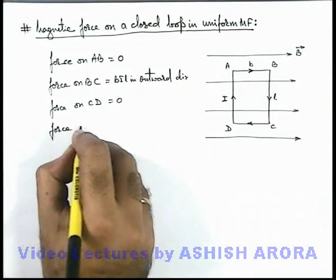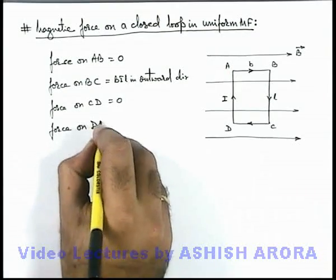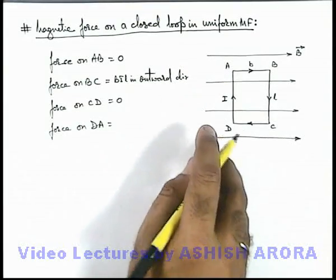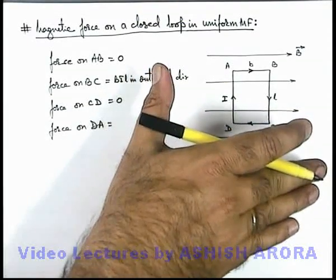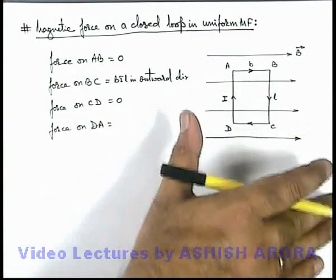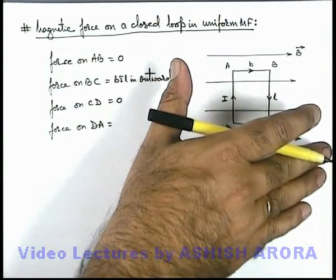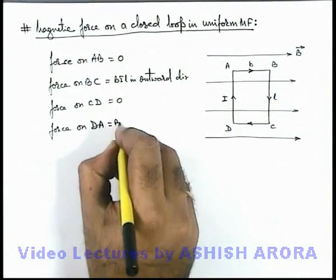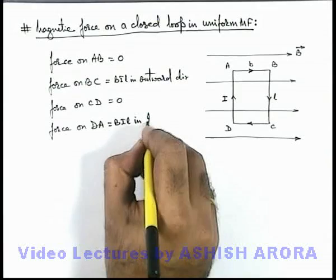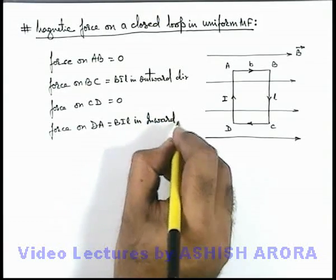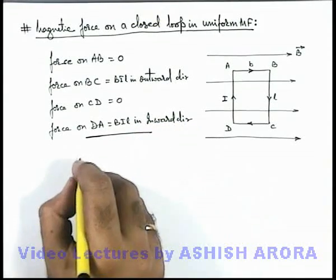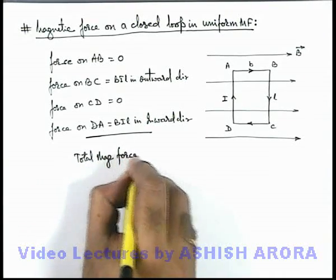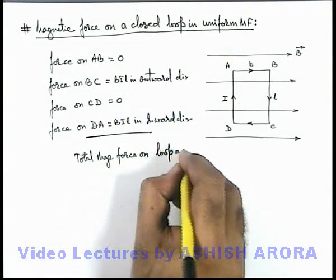For wire section DA, the magnetic induction is toward the right and current is in the upward direction. Using the right-hand palm rule — fingers pointing toward magnetic induction, thumb along the direction of current — the palm face points in the inward direction. So the force on DA is BIl in the inward direction. Therefore, the net total magnetic force on the loop is equal to zero.